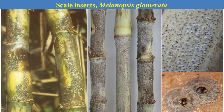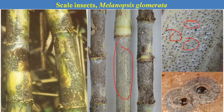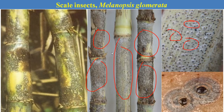The next sucking pest is scale insect, Melanaspis glomerata. The scales appear on the sugarcane stem or cane and continuously feed, sucking cell sap from the canes. The canes become withered and dried, and sucrose percentage is also reduced.